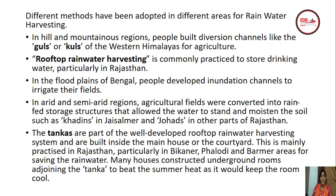Different methods have been adopted in different areas. In hills and mountain regions, people build diversion channels like the guls of the Western Himalayas for agriculture. Rooftop rainwater harvesting is commonly practiced for storing drinking water, particularly in Rajasthan. In the flood plains of Bengal, people developed inundation channels to irrigate fields. In arid and semi-arid regions, agricultural fields were converted into rain-fed storage structures — such as khadins in Jaisalmer and johads in other parts of Rajasthan. The tankas are part of a well-developed roof rainwater harvesting system built inside the main house or courtyard, practiced in Rajasthan particularly in Bikaner, and many houses constructed underground rooms adjoining the tanka to beat the summer heat.